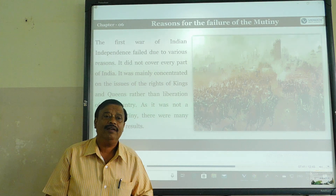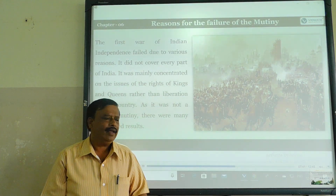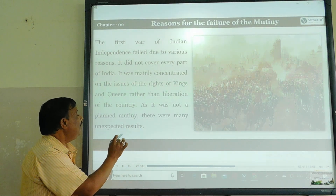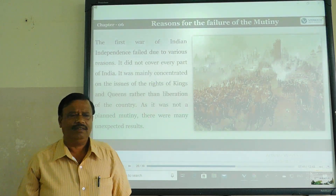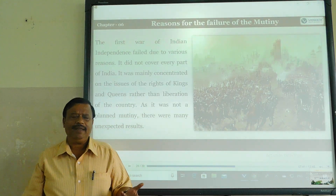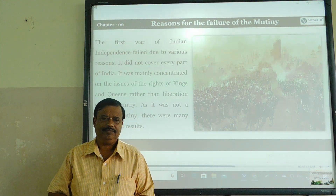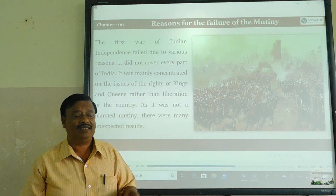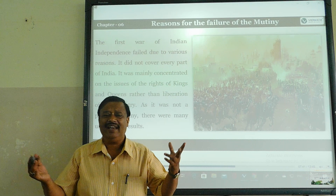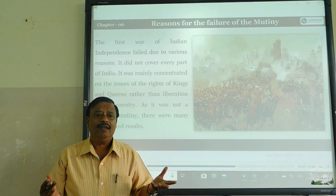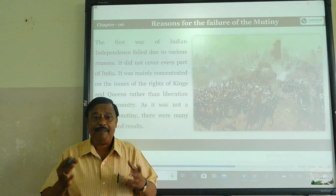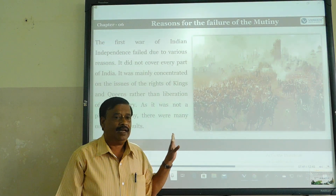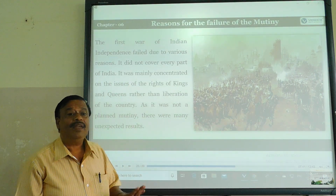Fourth one: there were many unexpected results. The expectation was to win and get freedom, but what happened? Unexpected results — looting, plundering, and many misactivities happened in the form of the 1857 revolt. That's why the 1857 revolt became a failure.